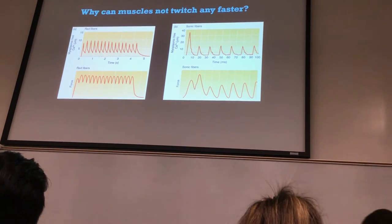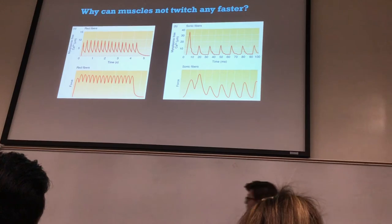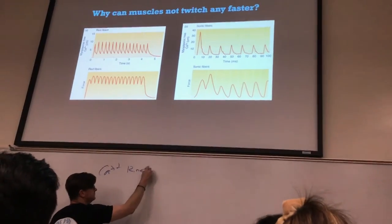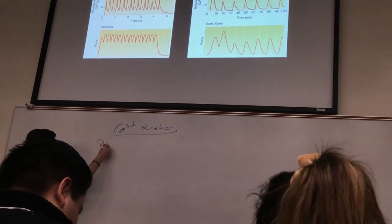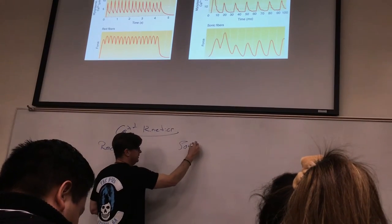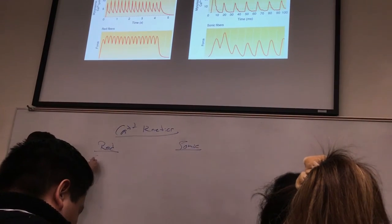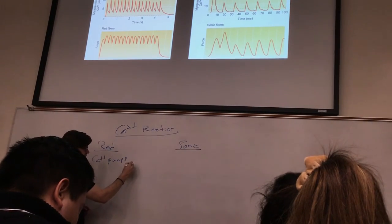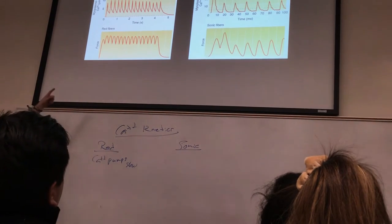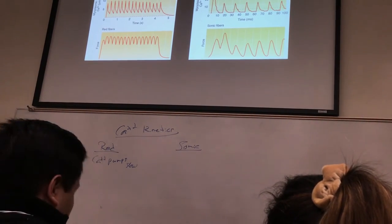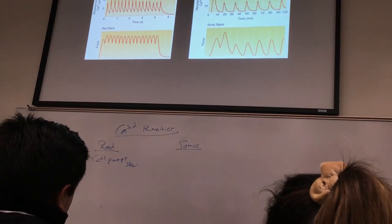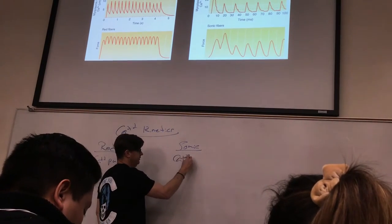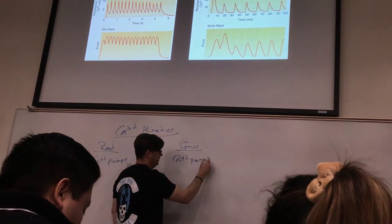Looking at the calcium kinetics: in red fibers versus sonic fibers, the calcium pumps in red fibers are relatively slow. That's why the muscle can only contract at that rate of speed — because you have to clear the calcium out of the cytoplasm. Whereas sonic fiber types, their calcium pumps are very fast.